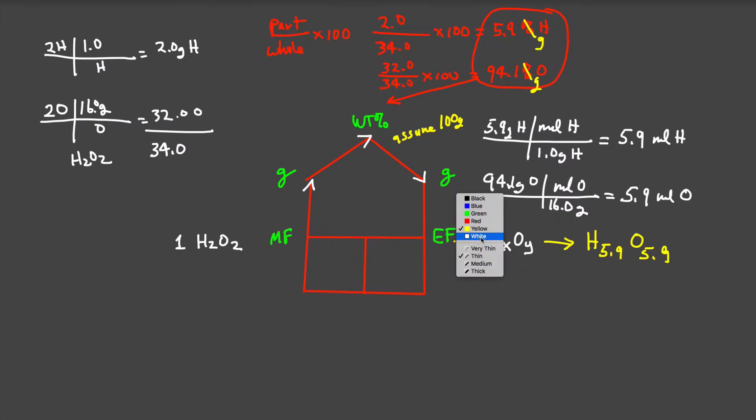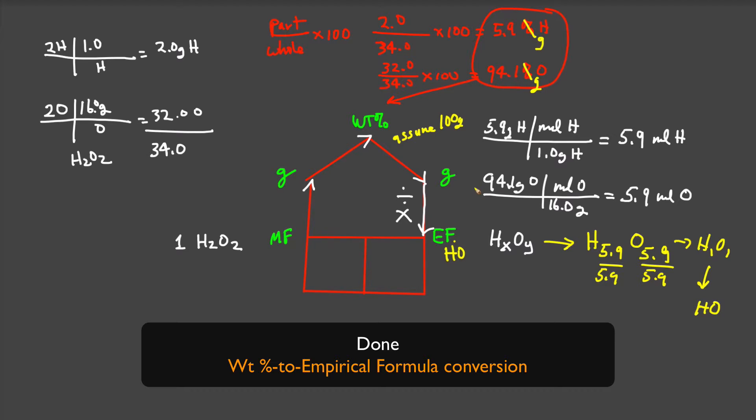The trick is either a one or two step process. First, divide through by the smaller or smallest coefficient. If that doesn't solve it, then multiply all coefficients by some integer that will make all of them integers. Dividing both by 5.9 gives us H1O1, so our empirical formula for peroxide is just HO. We have now answered the second type of question - we've gone from weight percent to empirical formula.